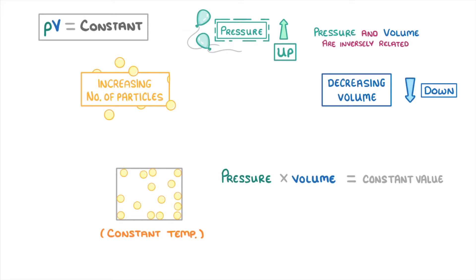For example, if we increased the volume, then the pressure would decrease. So when multiplied together, they'll still give the same value.